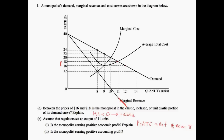Is the monopolist earning positive accounting profit? Accounting profit does not take into account those implicit costs that we included in economic profit. Therefore, because implicit costs are not subtracted in calculating accounting profit, we know that this firm will be earning positive accounting profit, since there will only be accounting for those explicit costs that we physically see, rather than other costs such as opportunity costs that we included in the economic profit analysis.